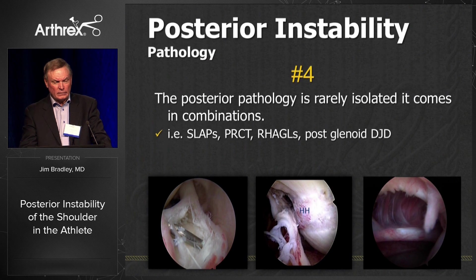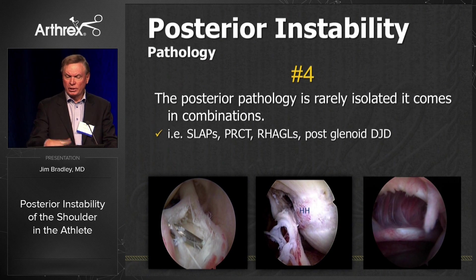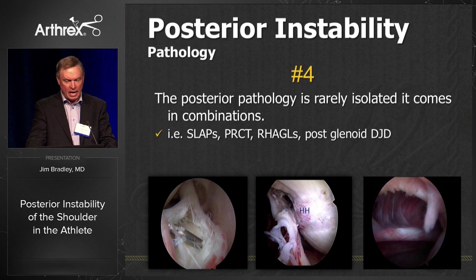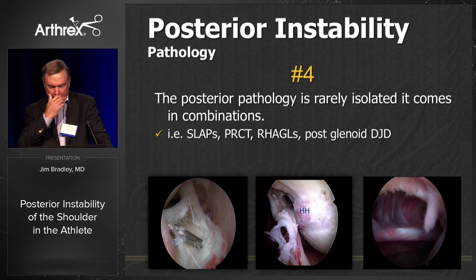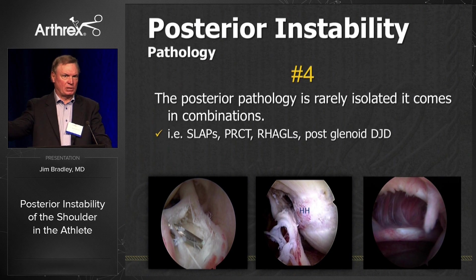The fourth thing we learned is that posterior instability rarely comes in isolation — it always comes in some combination: either with a SLAP tear, a partial cuff tear, posterior glenoid DJD, or a reverse Hagl lesion. These examples are all posterior instabilities in major college athletes and an NFL player. One player has a split in the biceps requiring repair before the posterior fix. A middle linebacker for an NFL team in Florida presented with a posterior Hagl lesion. Another major college player had a large capsular split requiring repair before addressing the labrum.